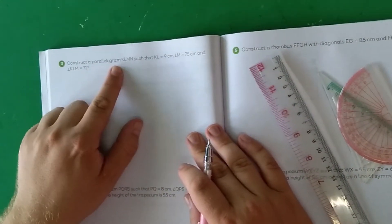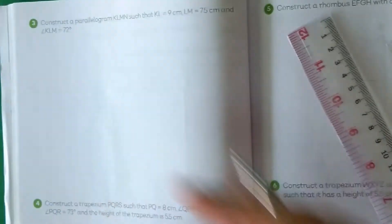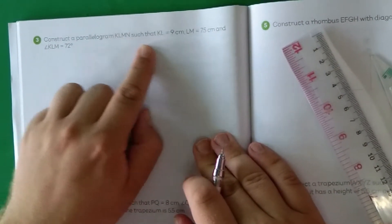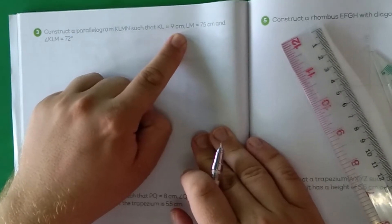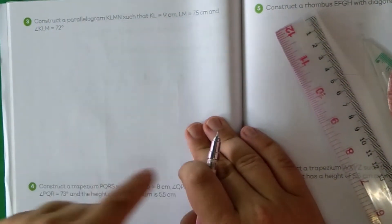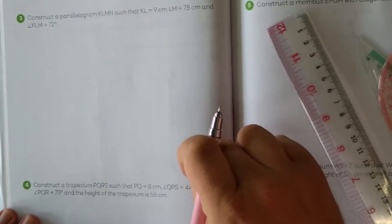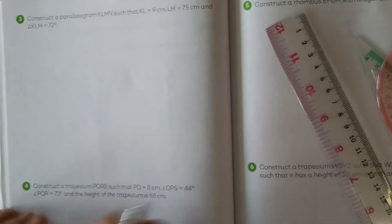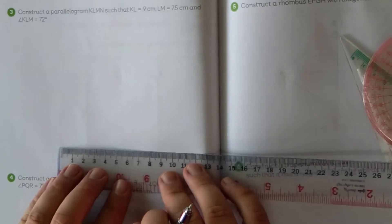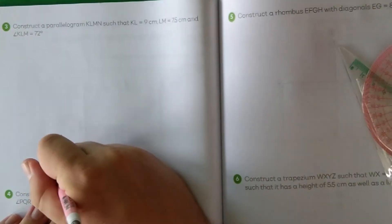Number three is a parallelogram. We're looking at a shape that's going to have two parallel lines that will be met by two other parallel lines. In this case, we've got KLMN, KL is 9 centimeters, LM is going to be 7.5 centimeters, and KLM will be 72 degrees. Given that we know KLM is going to be an acute angle, let's maybe start a little bit further over on the page.